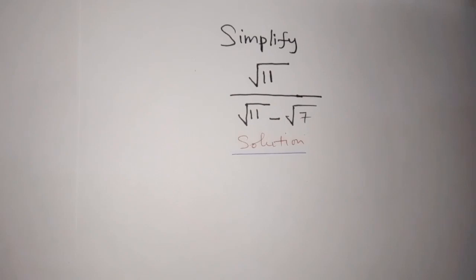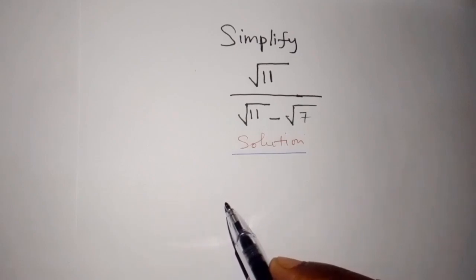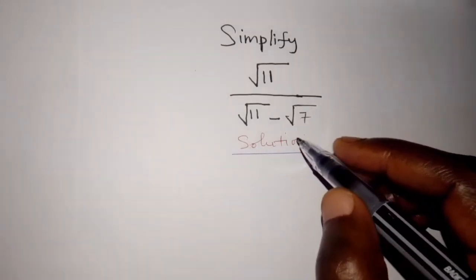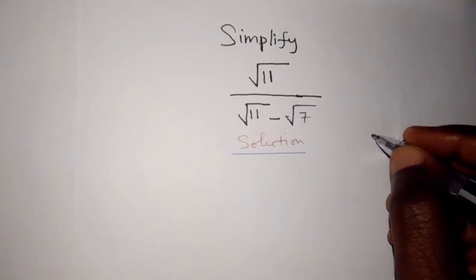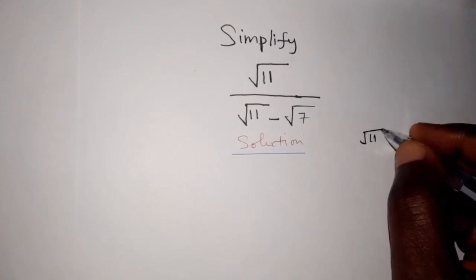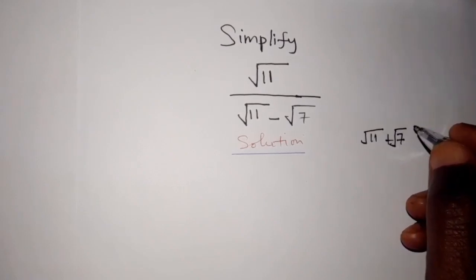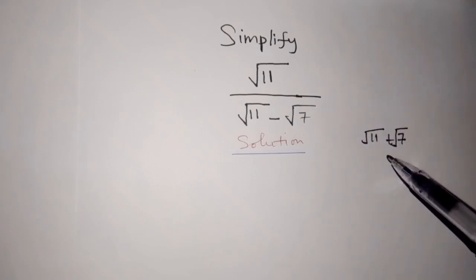Simplify square root of 11 over square root of 11 minus square root of 7. To simplify this, we multiply both the denominator and numerator by the conjugate of square root of 11 minus square root of 7, which is square root of 11 plus square root of 7.